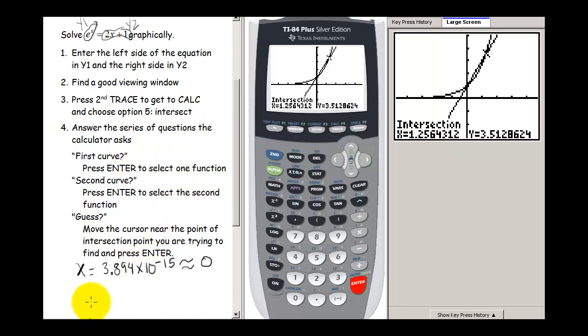And I get an intersection of x equals 1.2564 about. So our second solution is at about x equals 1.2564. Now there's probably some rounding error in there, but it's going out to four decimal places. That's going to be really close. So our two solutions to this equation, e to the x equals 2x plus 1, are 0 and 1.2564.